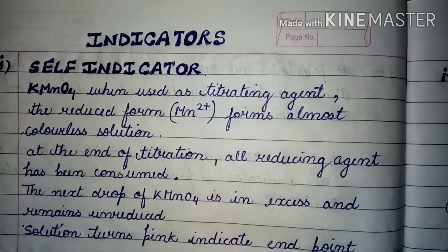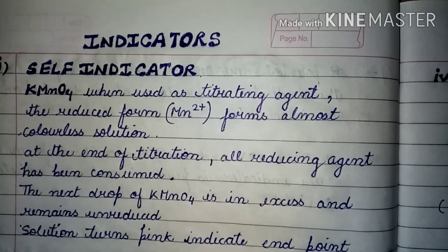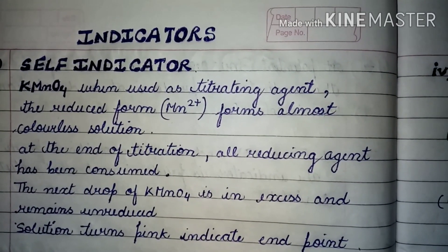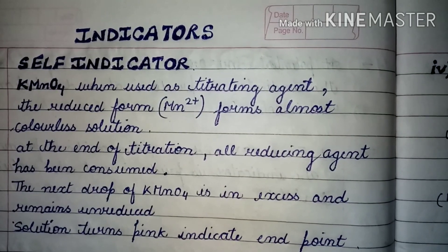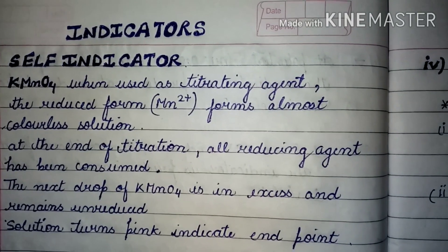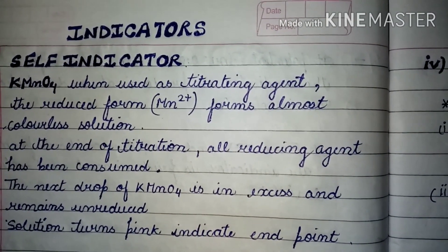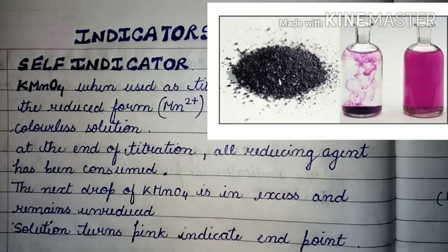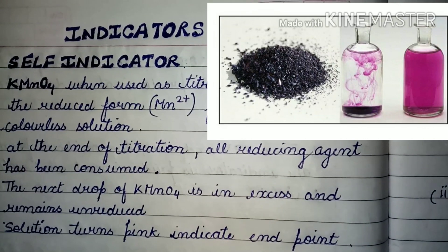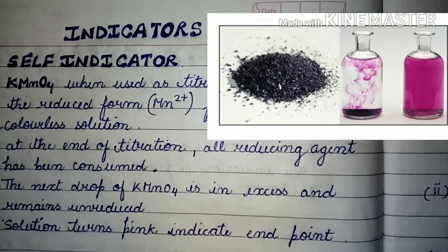In today's video we are going to see some more examples of indicators used in redox titration. The second type of indicator is the self indicator, which is a very important indicator. The main example is potassium permanganate, KMnO4, which is used as a titrating agent and which also acts as an indicator itself in a redox titration.